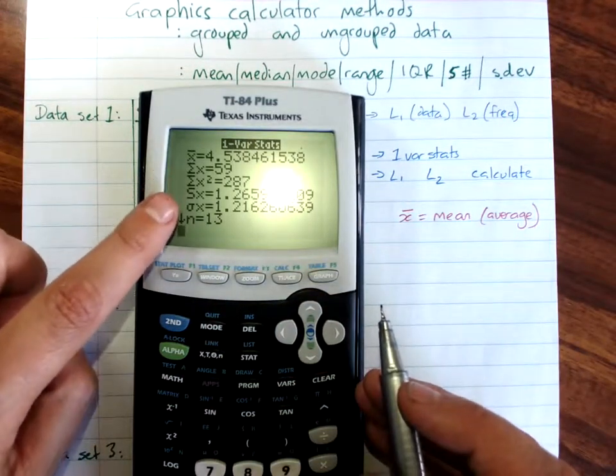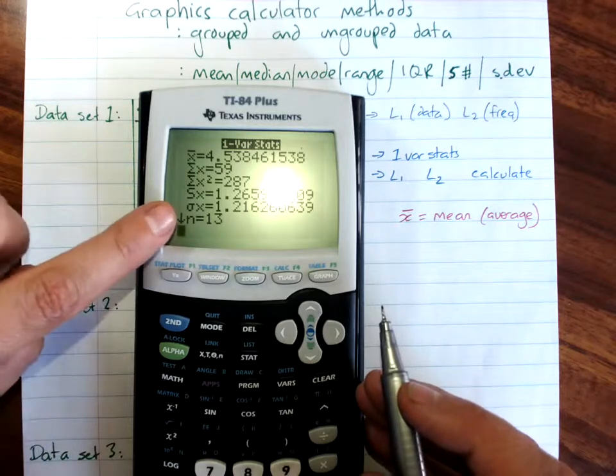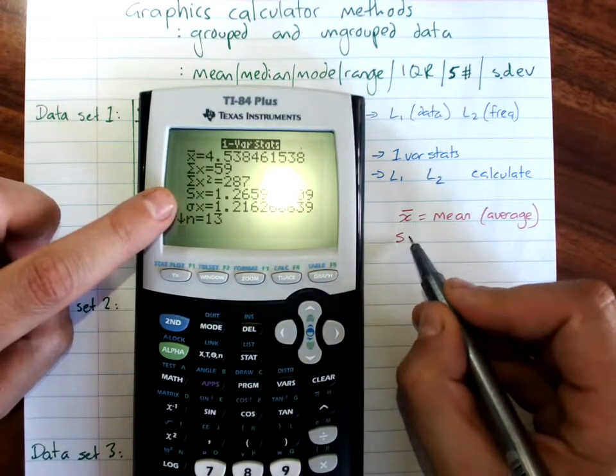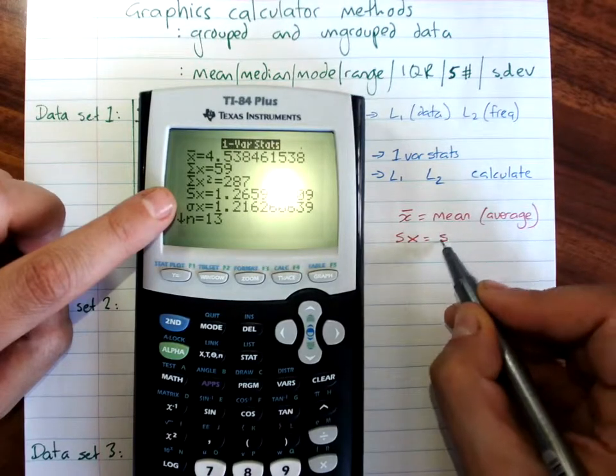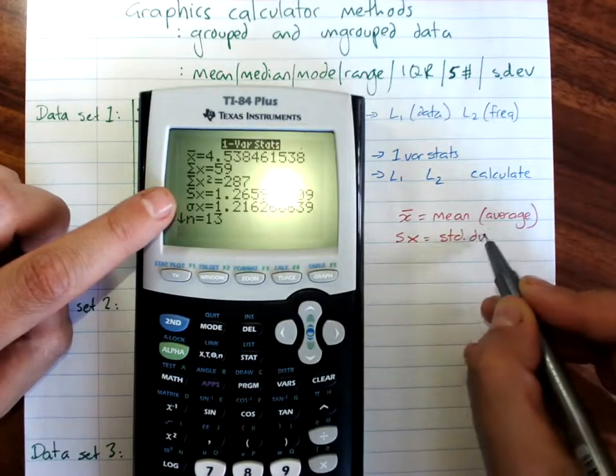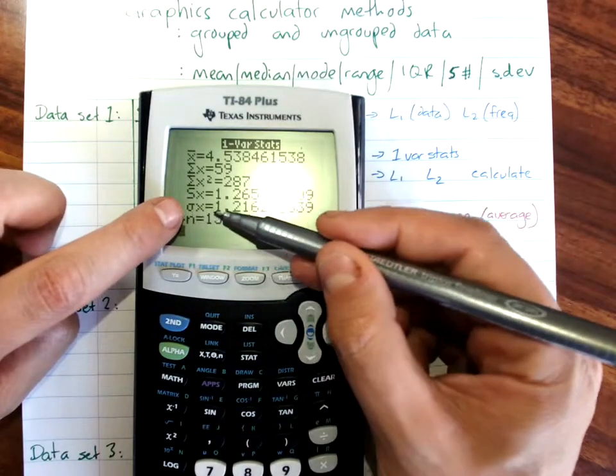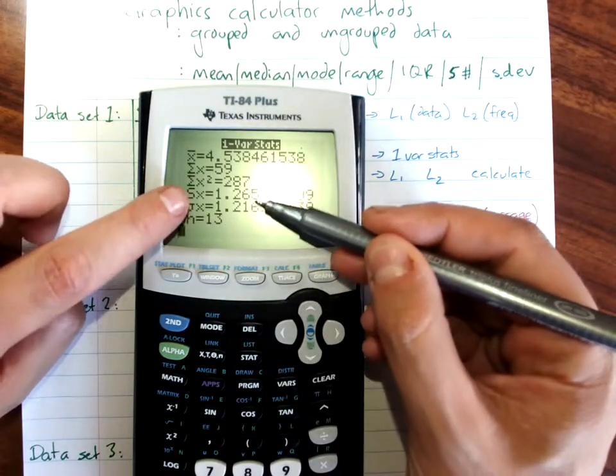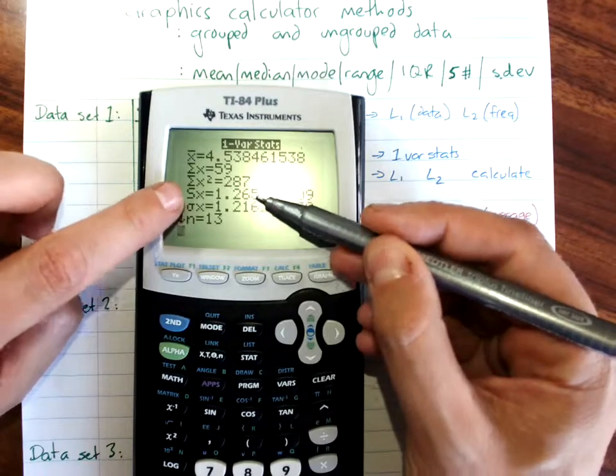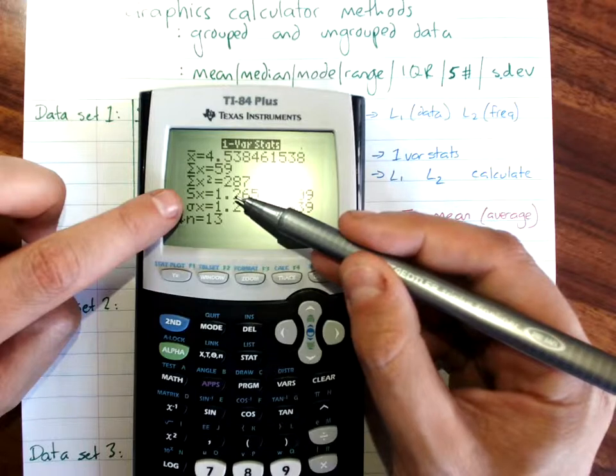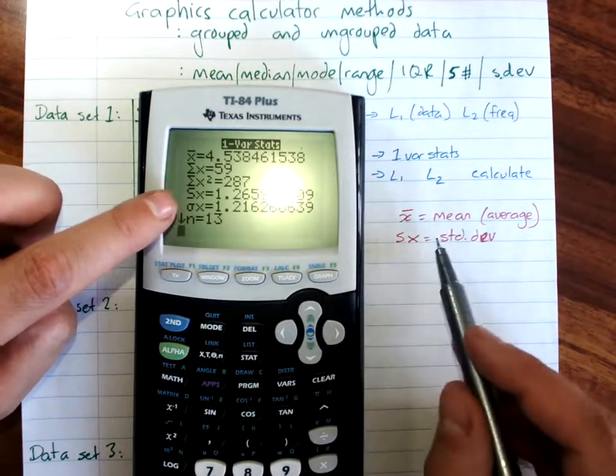Nothing much to worry about on this first screen until you get down here. Sx is your standard deviation. Now both this one and this little one here, sigma x, are the standard deviation. You'll see they're pretty close. They're two different ways of calculating it, sample and population. We're always using the sample, so always use Sx at the moment.